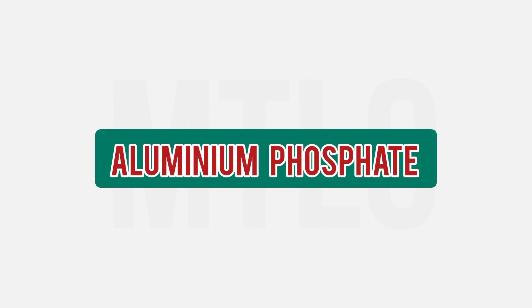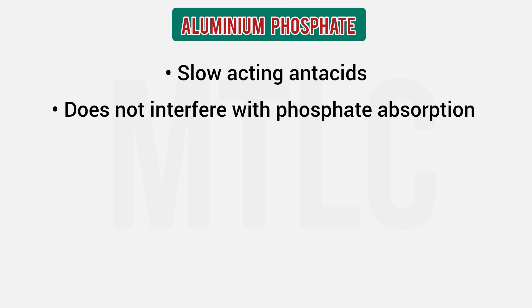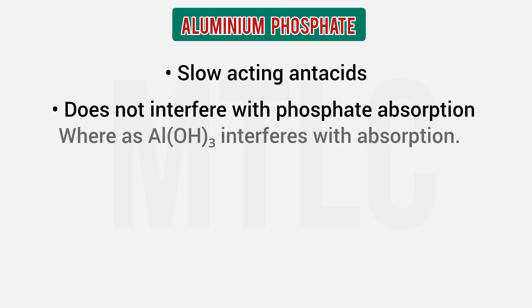Aluminium phosphate is a very slow-acting antacid. When you use aluminium hydroxide, it can disturb phosphate absorption in the body. So if a patient is on a high-phosphorus diet, you can prescribe aluminium phosphate instead of aluminium hydroxide.